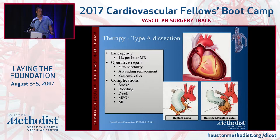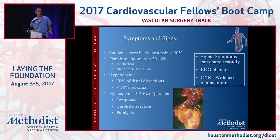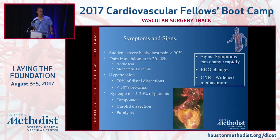Symptoms and signs: the most common are sudden severe back and chest pain. Generally most patients describe it between their shoulder blades — that's about 90% or greater. Pain in the abdomen can actually be misleading; you may think it's something else, but it is related to the aortic tear or mesenteric ischemia. Hypertension is present in 70% or greater of distal dissections and less than 50% of proximal. You may also see syncope in 15 to 20% of patients.